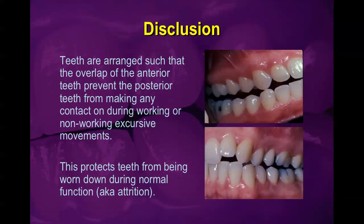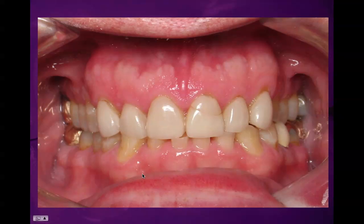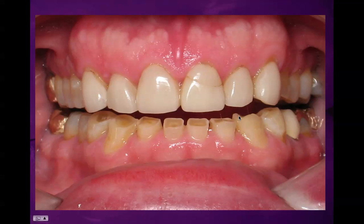Disclusion refers to canine-to-canine contact during protrusion or lateral movements of the jaw. This prevents posterior teeth from making contact during those motions, placing forces on the canines — the strongest teeth — and preventing excessive wear of the posterior teeth. This protection from excessive wear is called attrition. Without proper canine disclusion, once the canines wear down, the rest of the posterior teeth will follow.